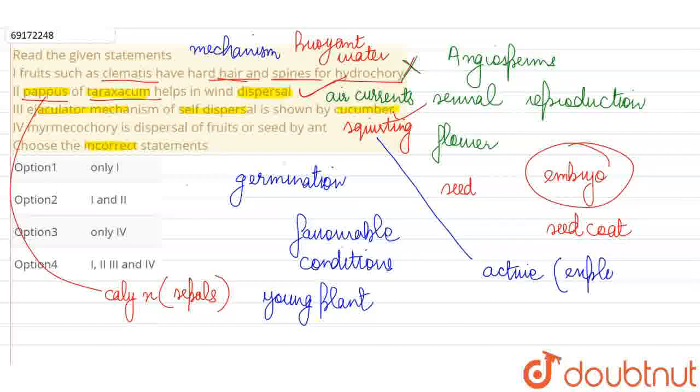But we can say that it has a kind of active mechanism. We can say that an explosive mechanism is used. The fruit bursts with a sudden jerk.